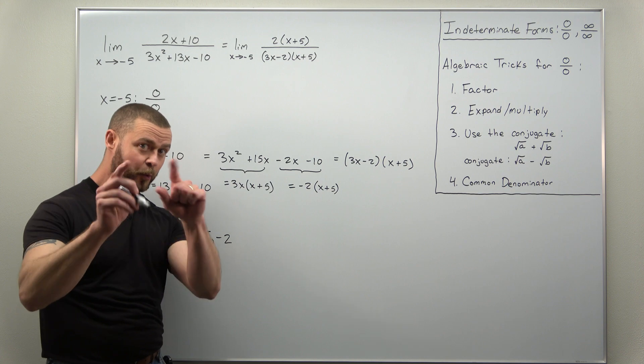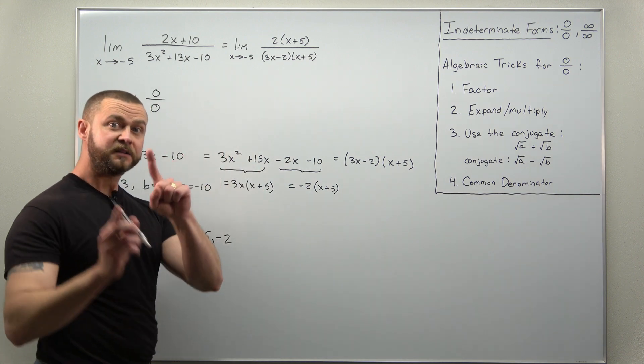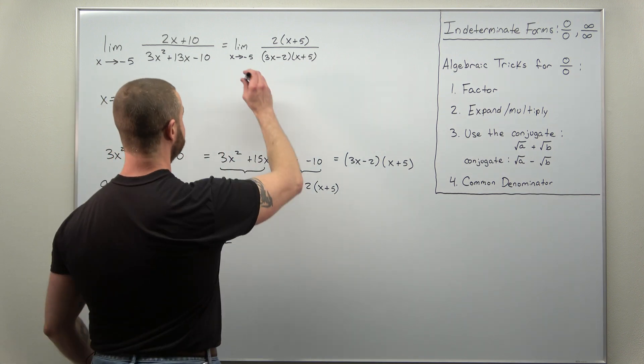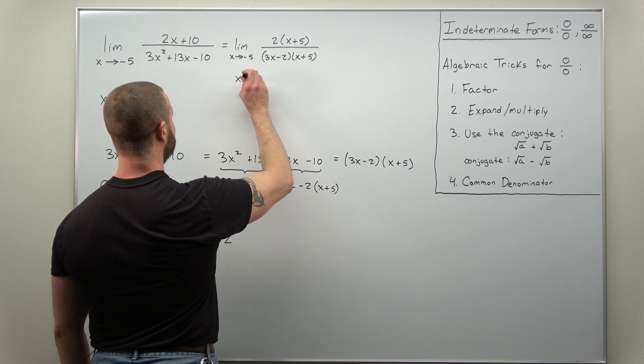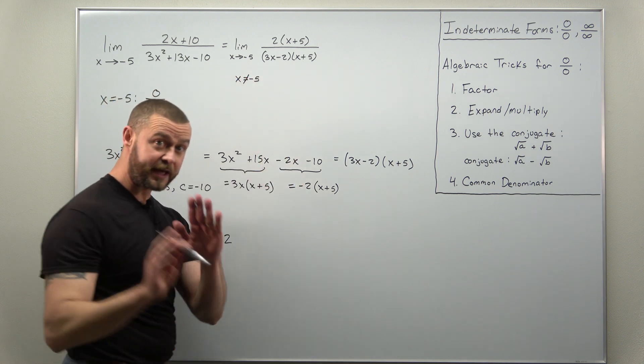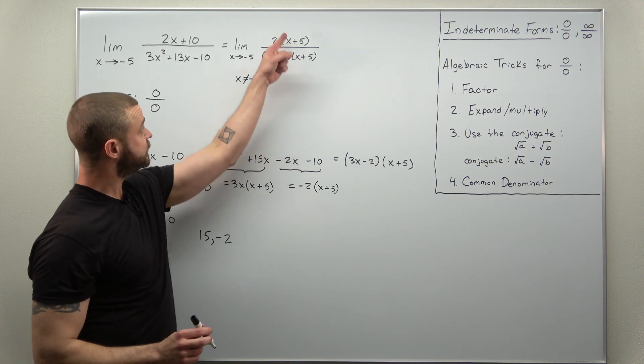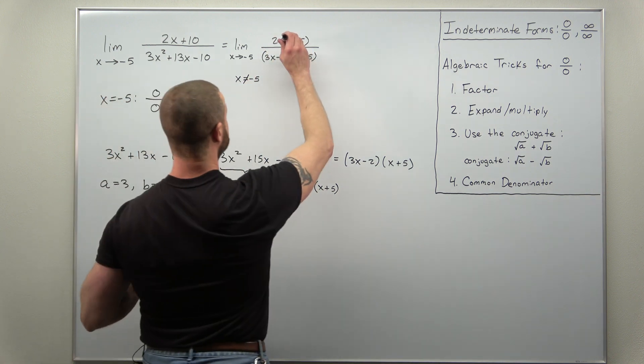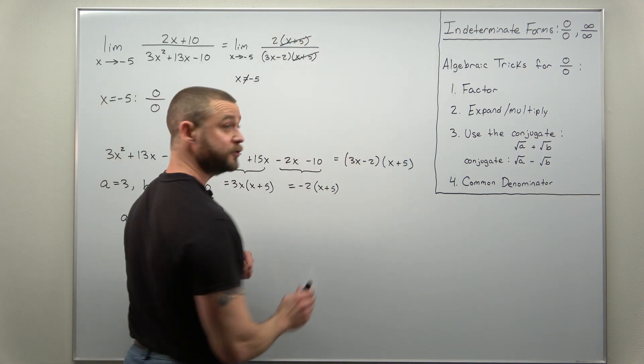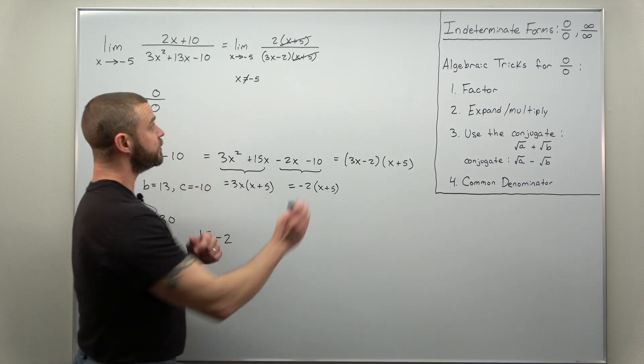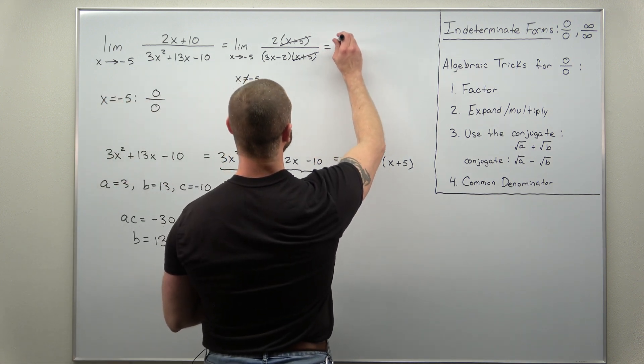And here before we cancel worth pointing out, since x is approaching negative 5 we never actually let x equal negative 5. We only get closer to negative 5. So that way you can go ahead and cancel those two factors of x plus 5 out. And we're left with a really simple limit.